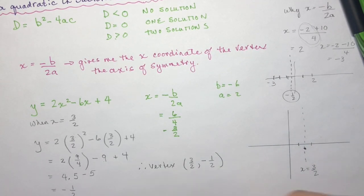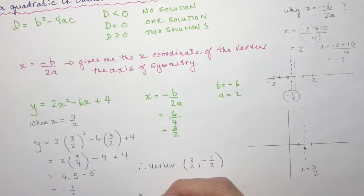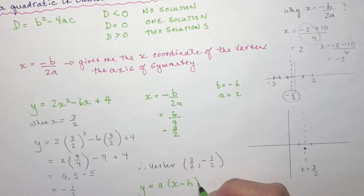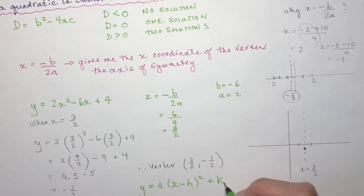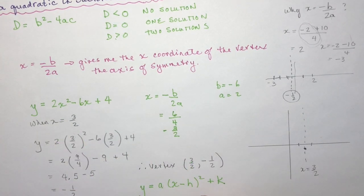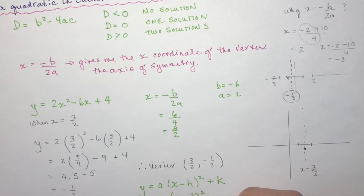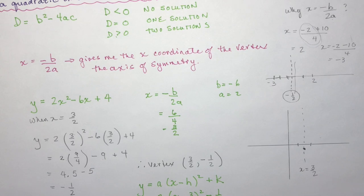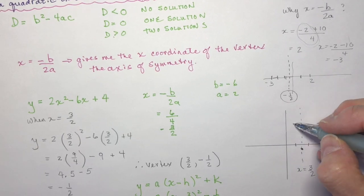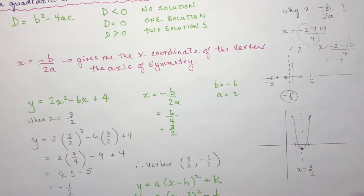If I wanted to write this in vertex form, remember we have a times x minus h squared plus k. My a value is given and doesn't change — it's still 2. So: y equals 2 times x minus 3 halves squared plus k, which is minus one half. So I've converted the equation from standard form to vertex form just by knowing the axis of symmetry using x equals minus b over 2a.